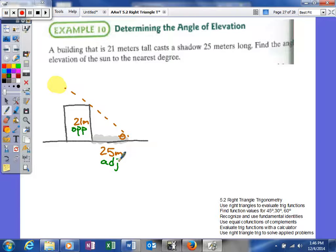Now we determine which trig function to use. The last example used tangent as well, and this time we'll also use tangent because we know the opposite and adjacent sides. So tangent of our angle equals 21/25.